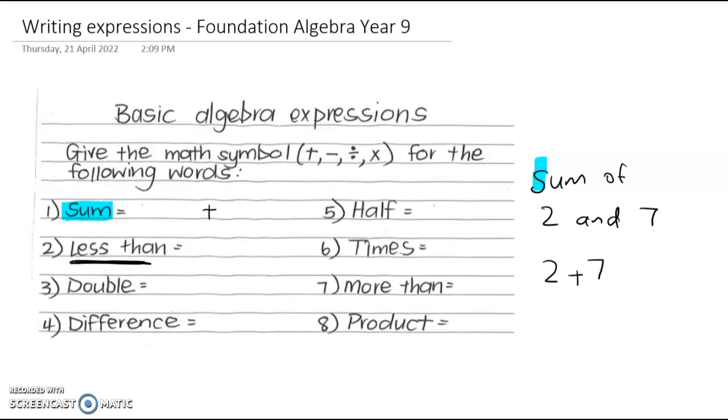If we're talking about less than, for example 2 less than 8, that means 8 take away 2. So less than is associated with take away sign. Double means to multiply by 2, right, so double 8 means 8 times 2 or 8 plus 8. So doubling is multiplying something by 2. And if I ask you to find a difference, for example the difference between 10 and 3, that means find 10 take away 3, right. The difference between 10 and 3 is 7. So difference is associated with the take away sign.